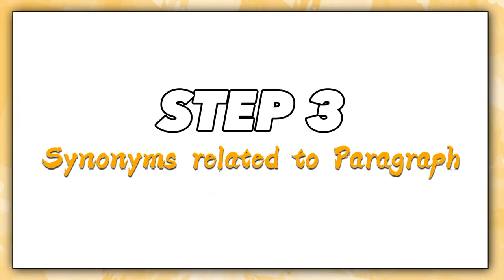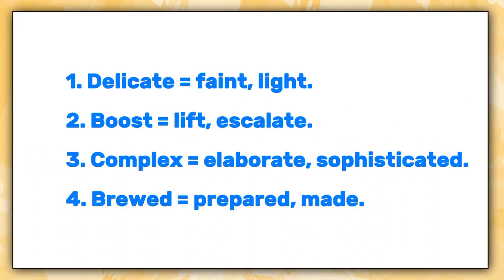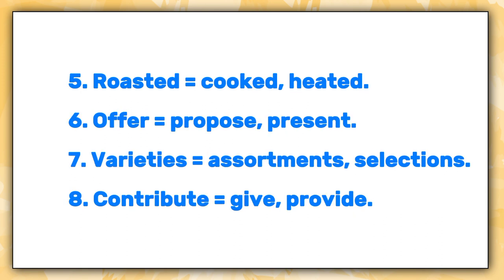Step 3. Synonyms related to the paragraph. Number 1: Delicate — equals faint, light. Number 2: Boost — equals lift, escalate. Number 3: Complex — equals elaborate, sophisticated. Number 4: Brewed — equals prepared, made. Number 5: Roasted — equals cooked, heated. Number 6: Offer — equals propose, present. Number 7: Varieties — equals assortments, selections. Number 8: Contribute — equals give, provide.